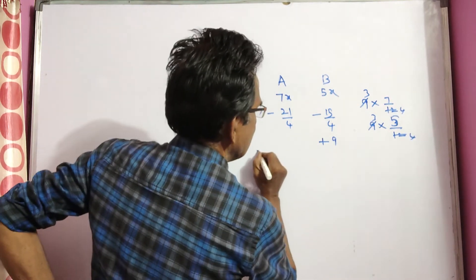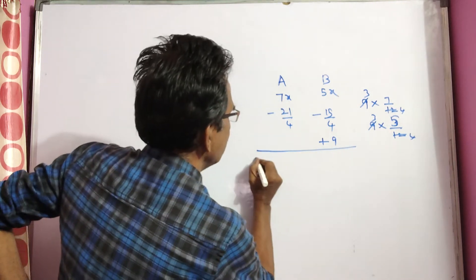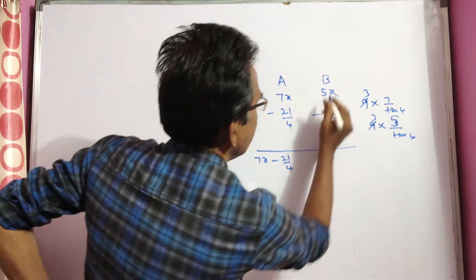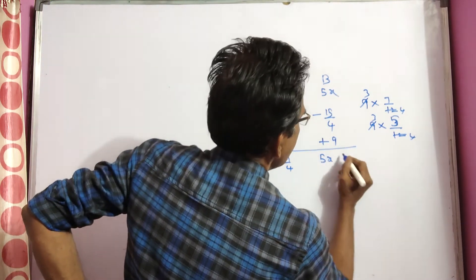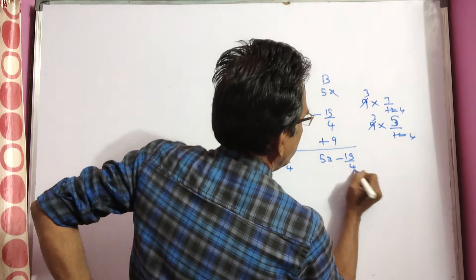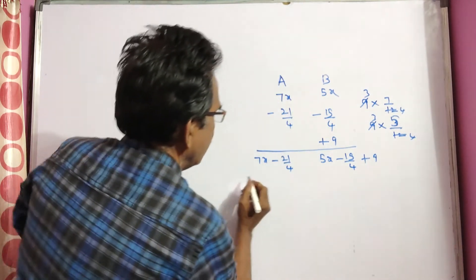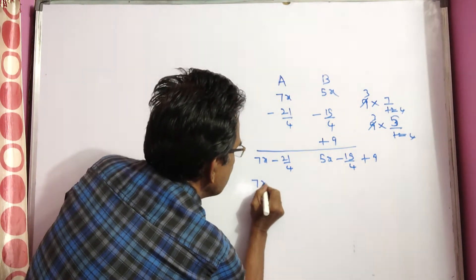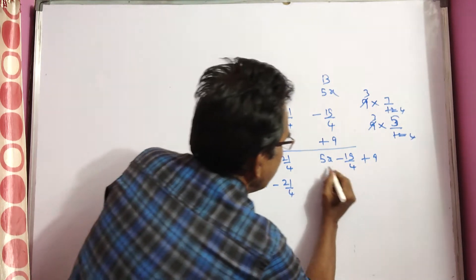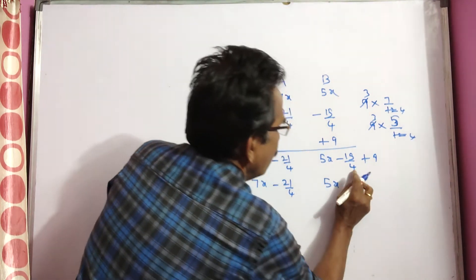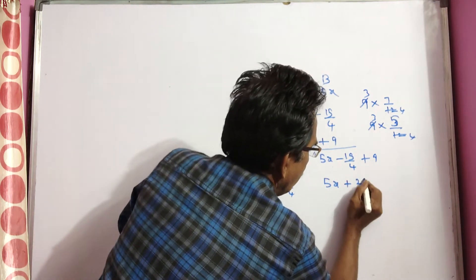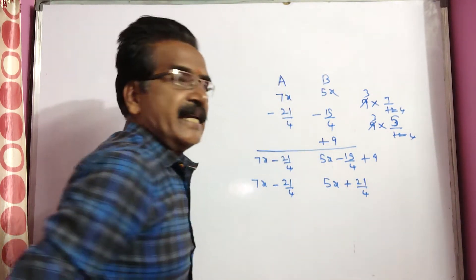After this, the resultant quantity of liquid A is 7x minus 21/4, and liquid B is 5x minus 15/4 plus 9, which equals 5x plus (36 minus 15)/4, that is 5x plus 21/4.